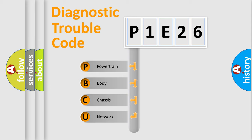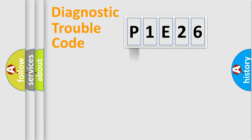We divide the electric system of automobile into four basic units: Powertrain, body, chassis, and network. This distribution is defined in the first character code.